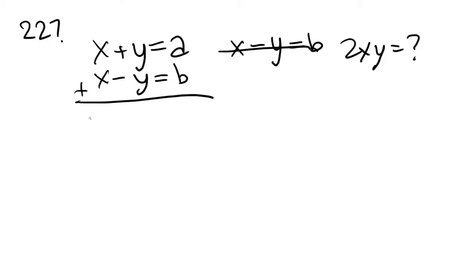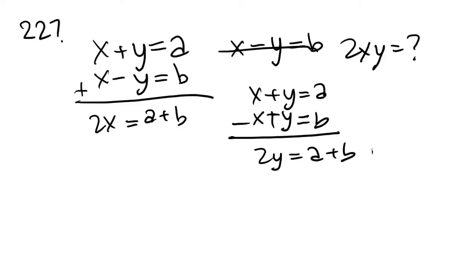What do we get? 2x equals a plus b. Now let's subtract. And when we subtract, it becomes negative x plus y equals b. And we have 2y equals a minus b. So now we have two brand new equations that we can use to figure out 2xy.